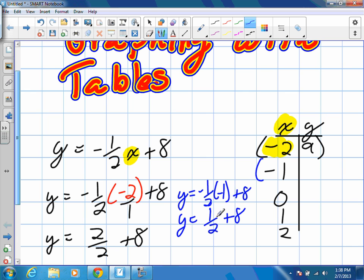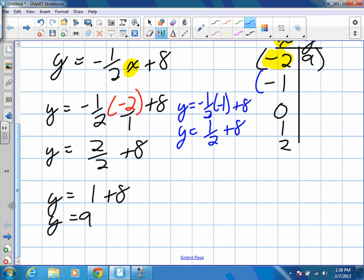Negative one half times negative 1 will be positive one half, plus 8. And what I'm going to do is, I already know one half is what as a decimal? 0.5. What's 0.5 plus 8? 8.5. So make it nice and easy for me. Our next coordinate is negative 1 and 8.5.